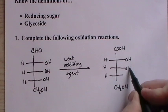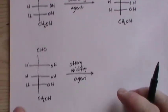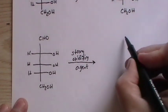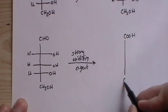But if it's a strong oxidizer, we can expect that both ends turn into COOH groups, into the carboxylic acid groups.